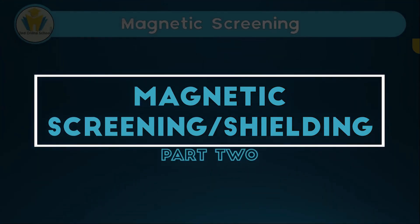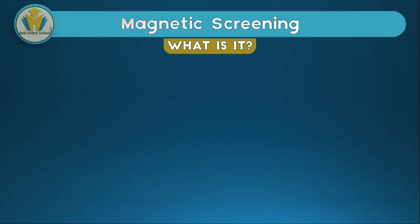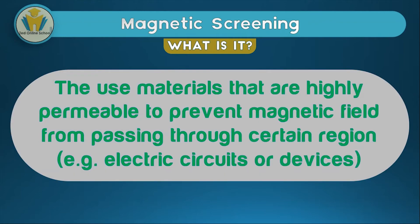Now let's look at magnetic screening, which is very closely related to magnetic permeability. Magnetic screening is the use of materials that are highly permeable to prevent magnetic field from passing through a certain region. It makes direct use of the property of magnetic permeability to shield specific areas. This is commonly applied in electric circuits or electric devices, since some devices cannot have magnetic field lines passing through them without risking short circuits, given the direct relationship between magnetic and electric fields.